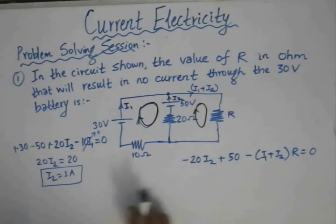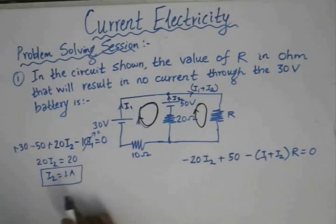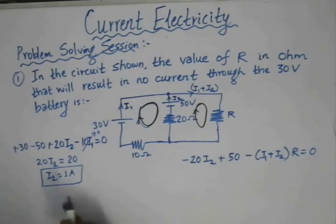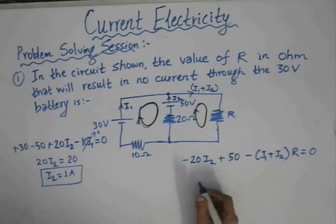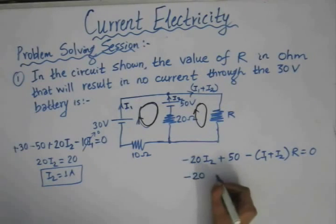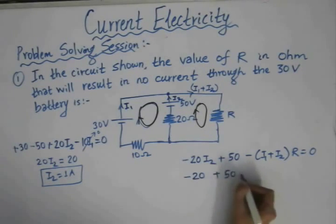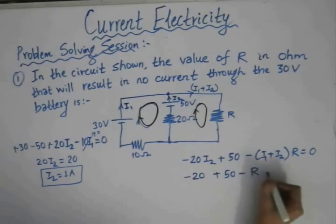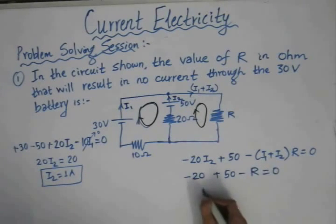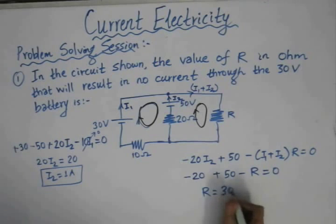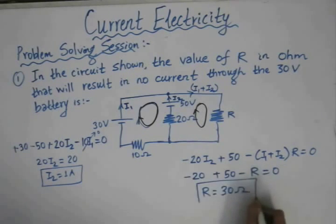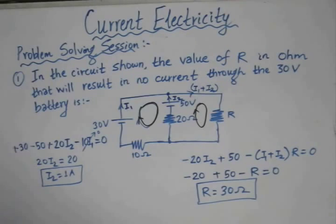We know I1 equals zero and I2 equals one Ampere. Substituting these values, we get the value of resistor R as 30 Ohm. This is the value of R for this resistor in the circuit shown.